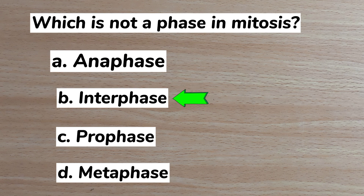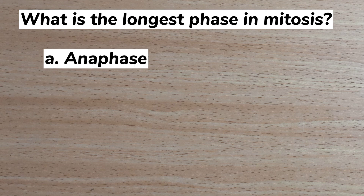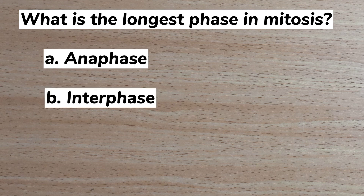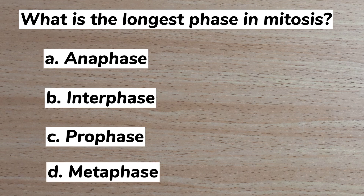Number 4. What is the longest phase in mitosis? A anaphase, B interphase, C prophase, D metaphase. Answer: C prophase.